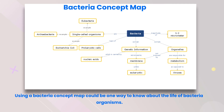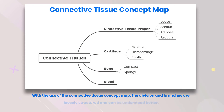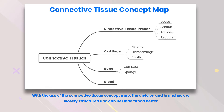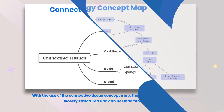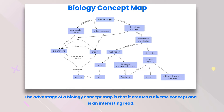Bacteria concept map: using a bacteria concept map could be one way to know about the life of bacteria organisms. Connective tissue concept map: with the use of the connective tissue concept map, the division and branches are loosely structured and can be understood better. Biology concept map: the advantage of a biology concept map is that it creates a diverse concept and is an interesting read.